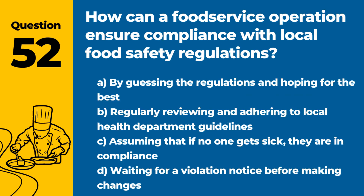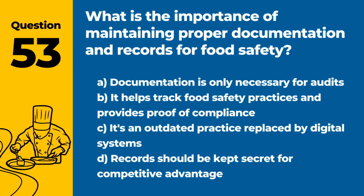Question 52. How can a food service operation ensure compliance with local food safety regulations? Answer: B. Regularly reviewing and adhering to local health department guidelines. Staying informed and compliant with regulations is crucial for legal operation and public safety.